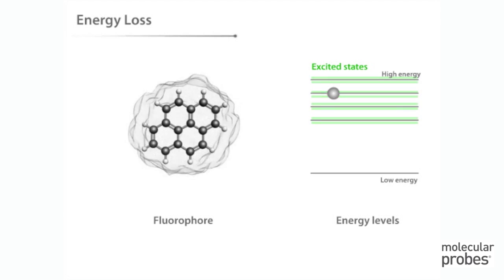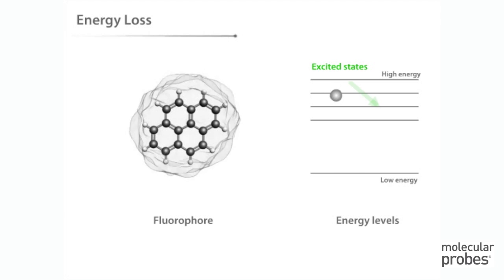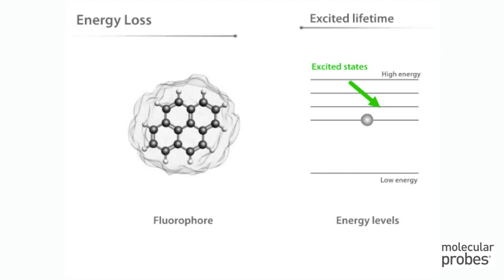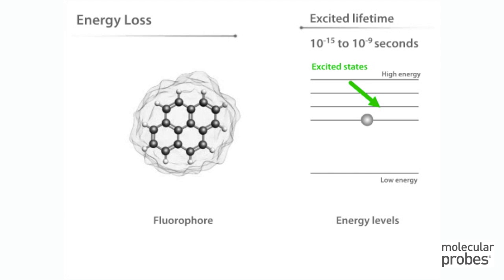Since the fluorophore is unstable at high-energy configurations, it eventually adopts the lowest-energy excited state, which is semi-stable. The length of time that the fluorophore is in excited states is called the excited lifetime, and it lasts for a very short time, ranging from 10 to the minus 15 to 10 to the minus 9 seconds.